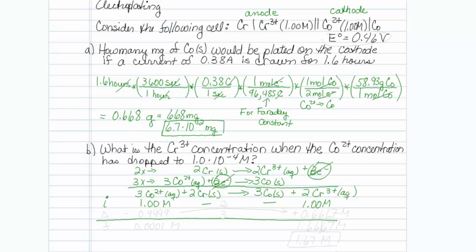Now this is one of those back out the delta row questions. My chromium 3+ concentration is going to grow. My cobalt is going to drop, and it's going to drop to 0.0001 molar. Well, if I know initial and I know final, I can figure out the delta row. So this is going to be a minus 0.9999 molar.